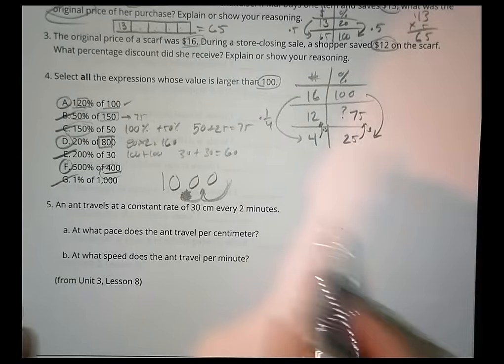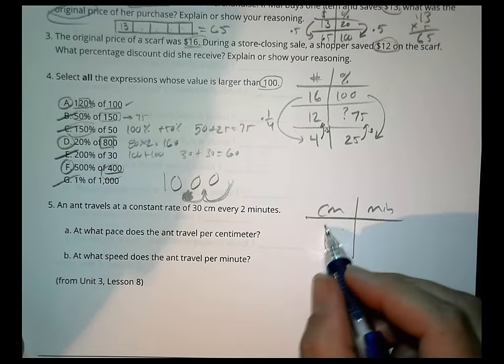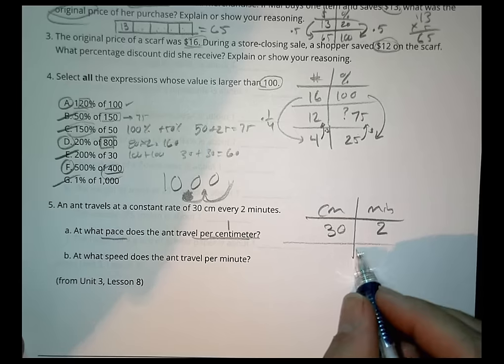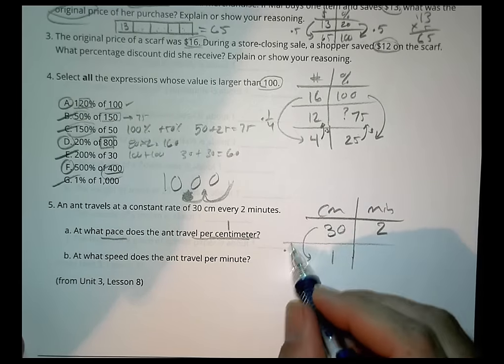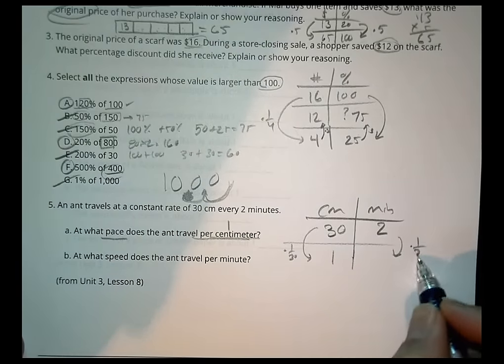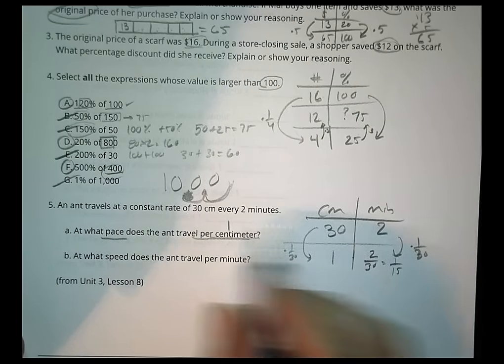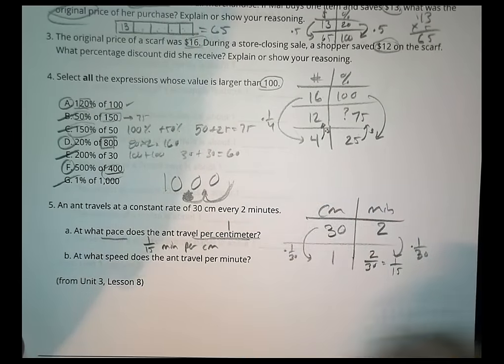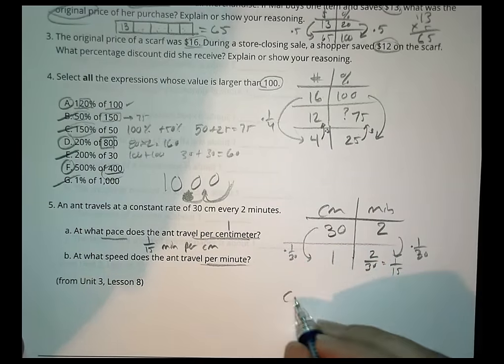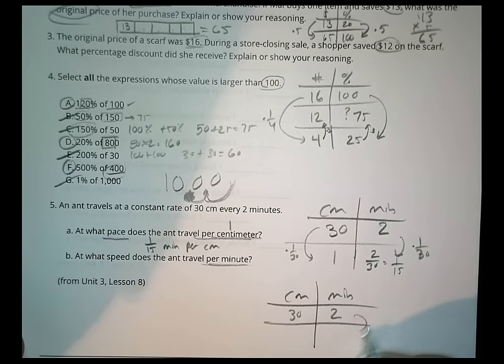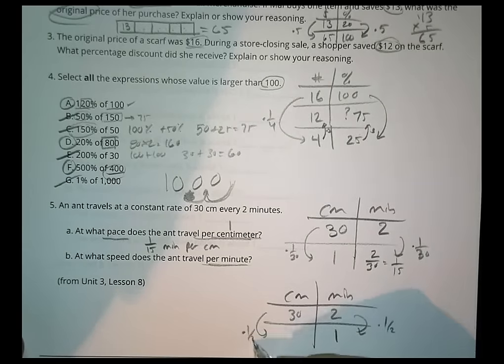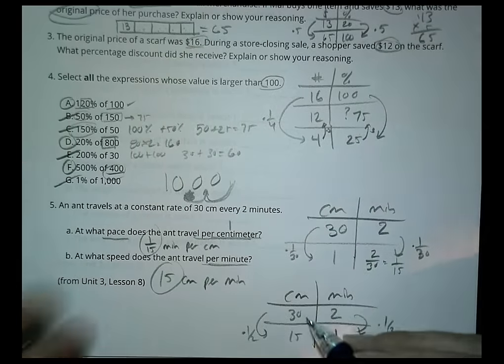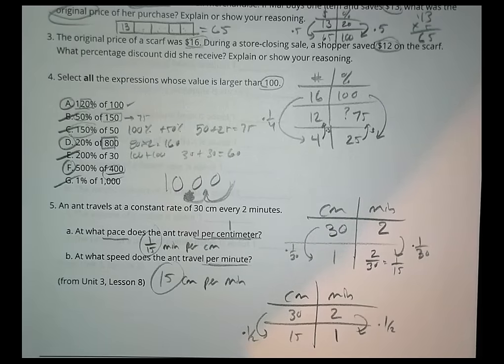Number 5. We have an ant travels at a constant rate of 30 centimeters every two minutes. At what pace does the ant travel per centimeter? Per centimeter means one centimeter. If this was going to become a 1, we would be multiplying by 1 over 30. This becomes multiplied by 1 over 30. So you get 2 thirtieths, which reduces to 1 fifteenth. So what pace is it going? It's going to go 1 fifteenth of a minute per centimeter. Now what speed is it travel per minute? We know we started at 30 in two minutes. So to go to one minute, that's multiplying by half. Multiply by half. And we have 15. So we have 15 centimeters per minute.